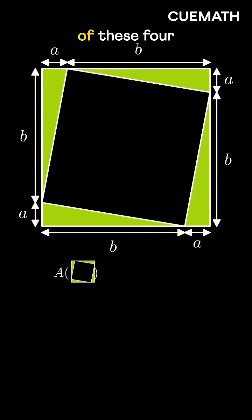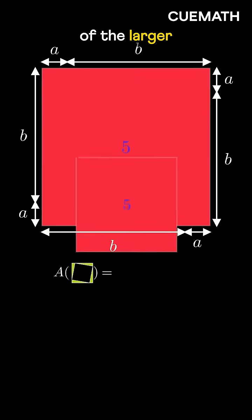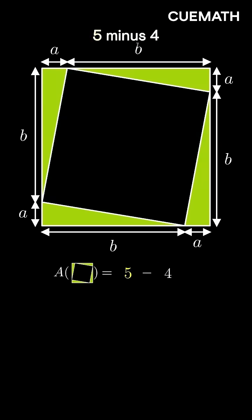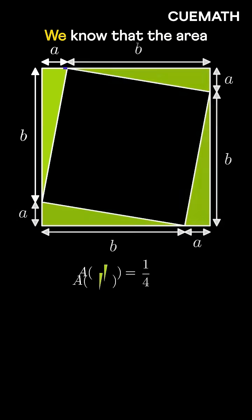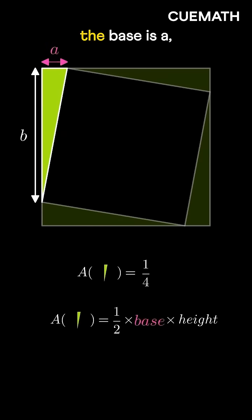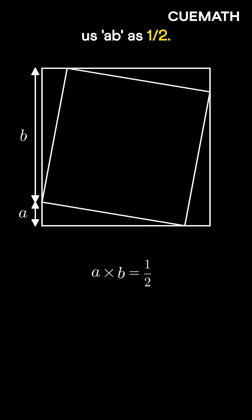The total area of these four triangles is the area of the larger square minus the area of the smaller square, 5 minus 4, or 1. So the area of each triangle is 1 over 4. We know that the area of a triangle is half times base times height. In this case, the base is A and the height is B. So half times AB must equal 1 over 4, which gives us AB as one half.